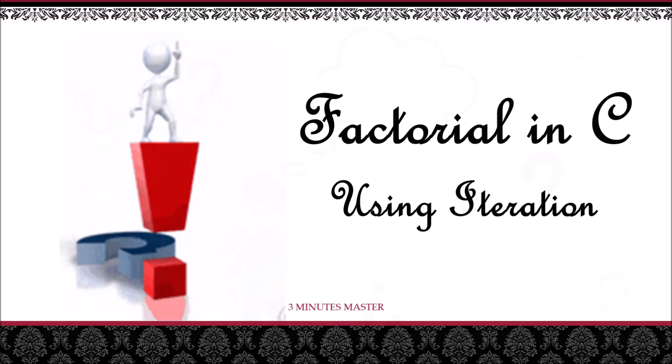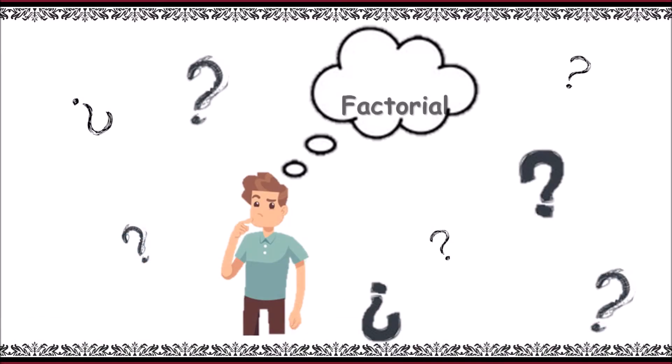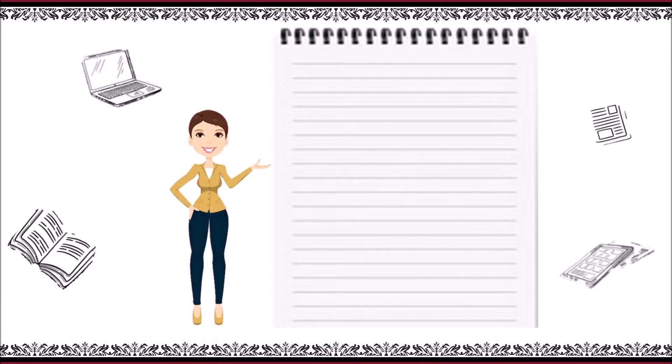In general, what do you mean by a factorial? A factorial of a number n is defined as the product of all positive integers that are below n up to 1. Let me take the help of an example.